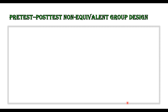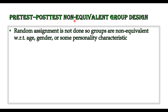The first quasi-experimental design we will be discussing is called the pre-test post-test non-equivalent group design. As we can see, it is a non-equivalent group design, and because of this non-equivalence, it falls under the jurisdiction of quasi-experimental design. The groups are non-equivalent because random assignment was not performed, which is the strongest tool to make equivalent groups. As a result, the groups formed may differ with respect to age, gender, or other personality or subject variables.